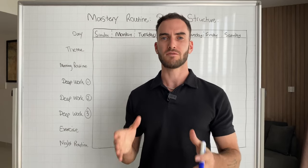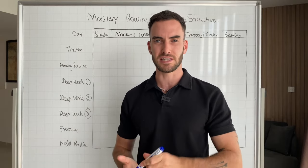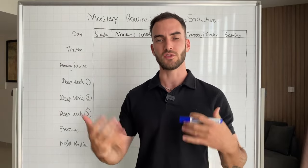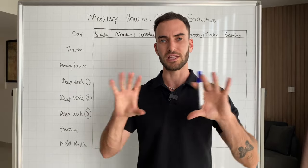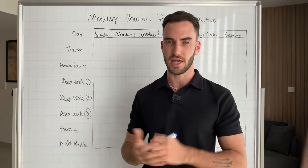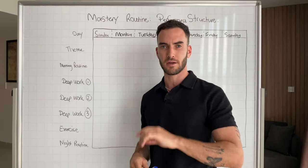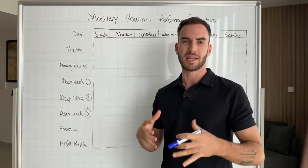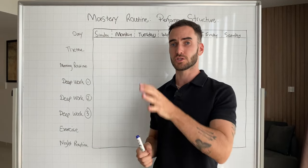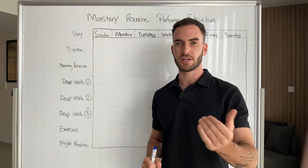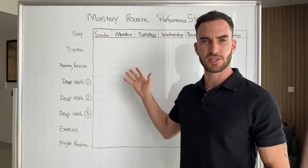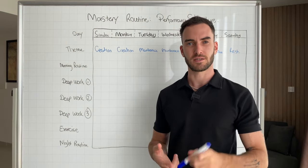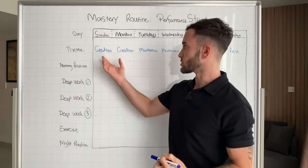Now that you've chosen your non-negotiables, we're going to theme your days and structure different work blocks and time for yourself to cultivate the flow state we're talking about. Pause this video if you haven't chosen your habits yet — even a vague idea is fine, just choose four on each side and run with those. The first part we're going to look at is the theme of the day. I'll base this off my current routine as an example, but apply it directly for yourself — there's no right or wrong.